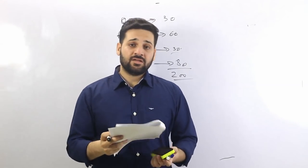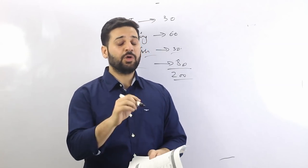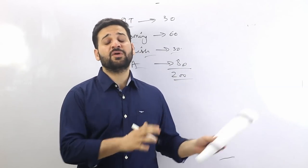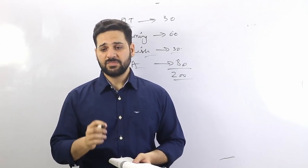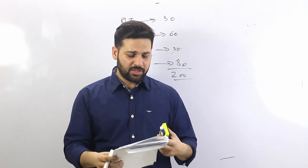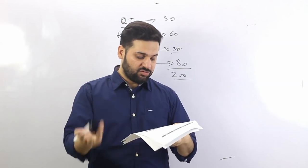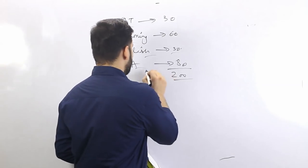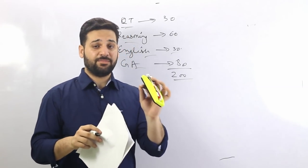There is some difference between the general awareness section of IBPS PO, SBI PO, and RBI Grade B — I'm talking about phase one. In IBPS PO, there will be questions about current affairs for the previous five or six months, countries and their capitals, basic banking terms, basic static GK, awards and honors, history of banking, list of important days — these are the basic questions.